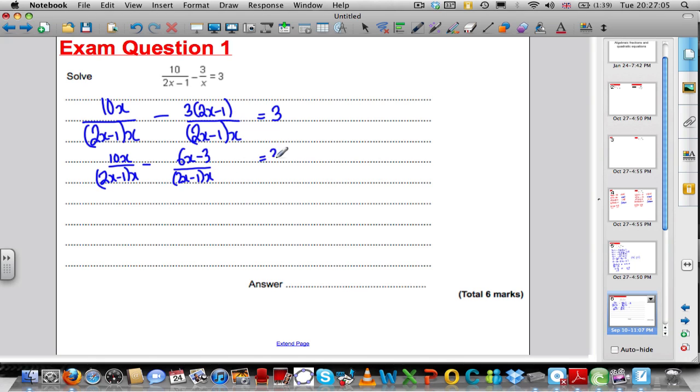Now try and combine. 10x subtract 6x is 4x and a minus minus 3 ends up being a plus 3.